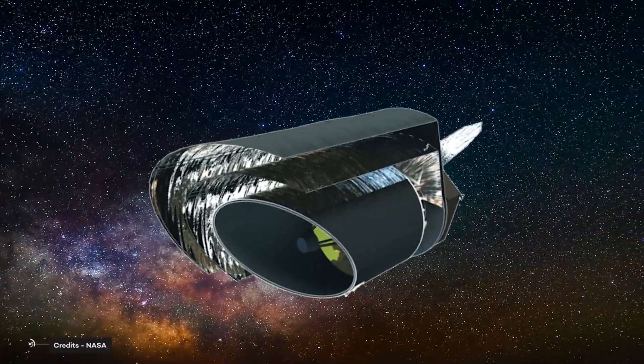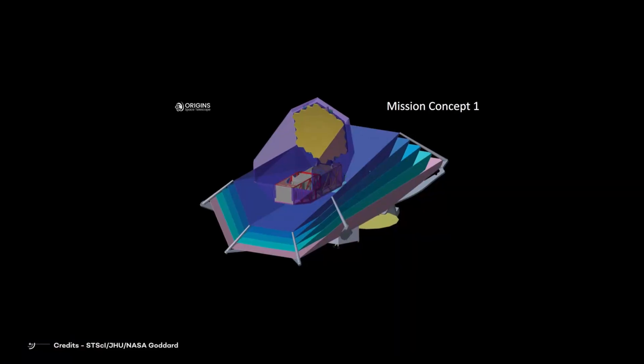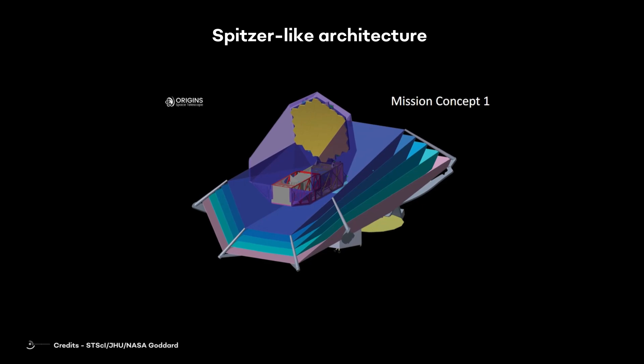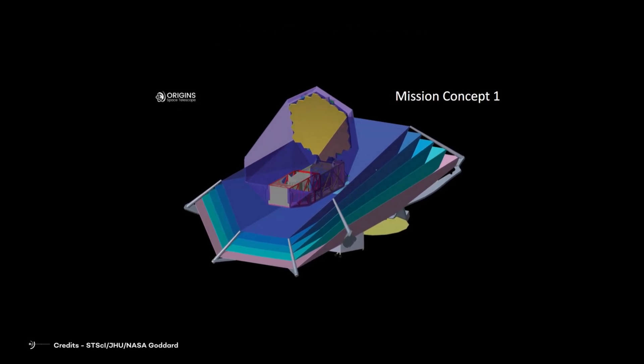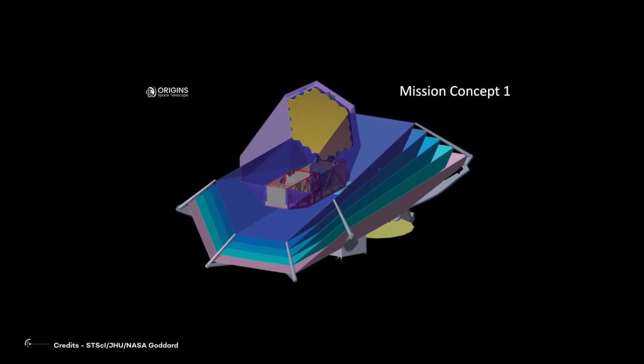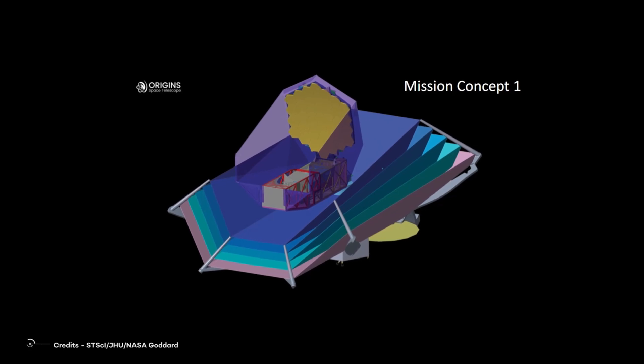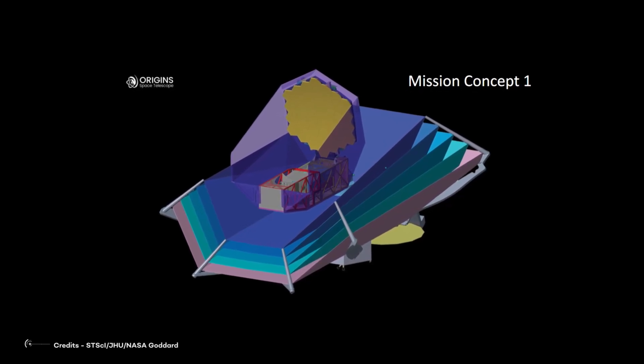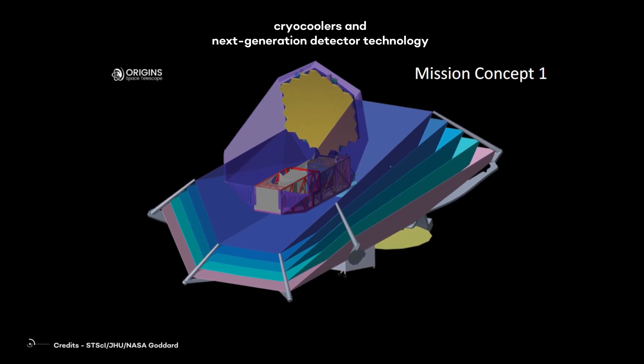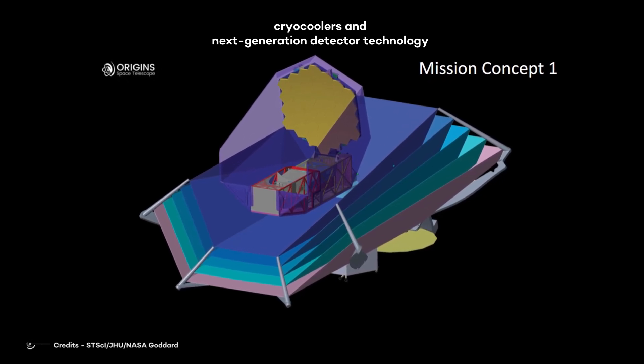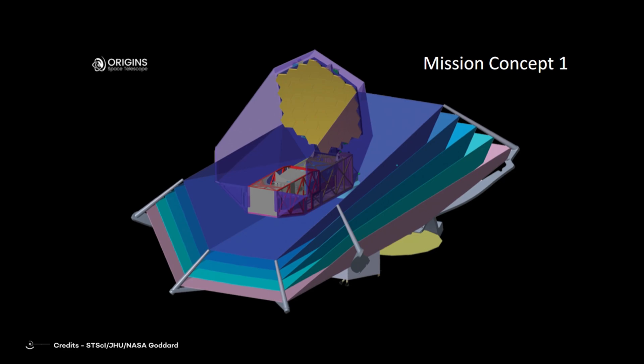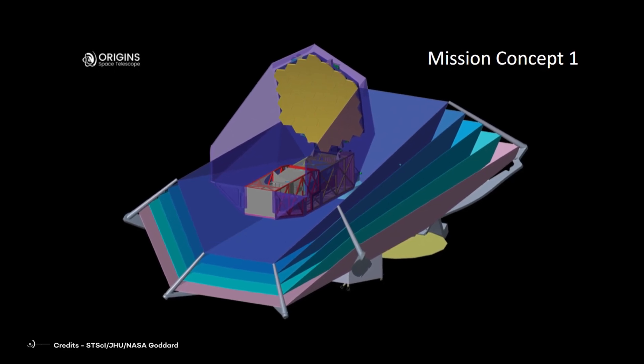Origins was designed to minimize complexity. The telescope has a Spitzer-like architecture and requires very few deployments after launch. The cryothermal system design leverages JWST technology and experience. A combination of current state-of-the-art cryo-coolers and next-generation detector technology will enable Origin's natural background limited sensitivity.